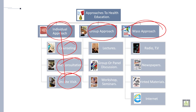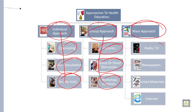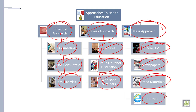The second one is the group approach. Under group approach, lecture, group or panel discussion, and workshop and seminar are included — all three belong to the group approach. Under mass approach, TV and radio, newspaper, printed material, and internet are included — all four come under mass approach.